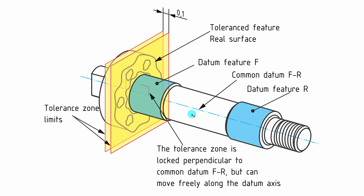Looking at what this tolerance means, it is similar to what we saw with the perpendicularity tolerance in hybrid tolerancing, except that the axis serving as the datum is now defined from both bearing surfaces, not just one. The tolerance defines two parallel planes separated by 0.1 millimeters, perpendicular to this axis defined from both bearing surfaces. The back side of the hub must remain between these two parallel planes, which are allowed to move back and forth, because this surface determines the zero point for the axial position of the shaft in the workpiece. In this sense it is not very different from the hybrid tolerance, except we've used a more functionally correct datum system.